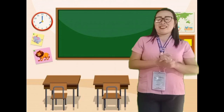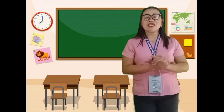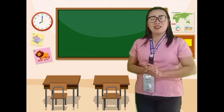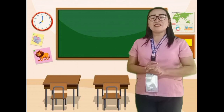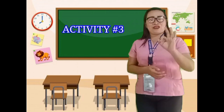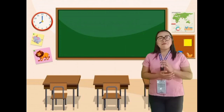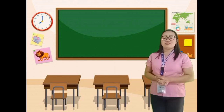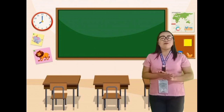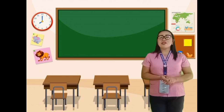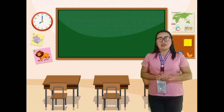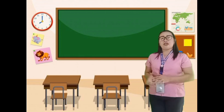Excellent! Because you got all the correct answers, you got another five stars. Let's continue doing the activity. Open your Learning Activity Sheet on page four. Activity Number 3, "Complete Me." Direction: Identify the uses of each simple machine and give one example. Write the answer inside the chart. I'll give you five minutes to do it. I will flash it on the screen.